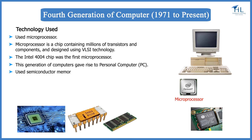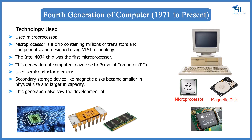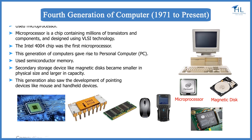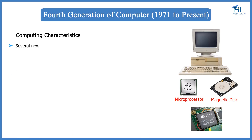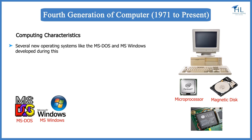Semiconductor memory replaced the earlier magnetic core memory, resulting in fast random access to memory. Secondary storage devices like magnetic discs became smaller in physical size and larger in capacity. This generation also saw the development of pointing devices like the mouse and handheld devices. Several new operating systems like MS-DOS and MS Windows were developed during this time.